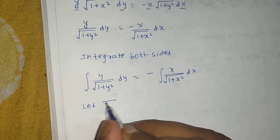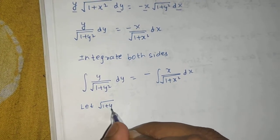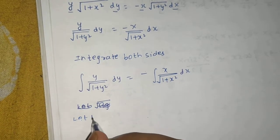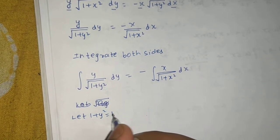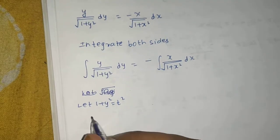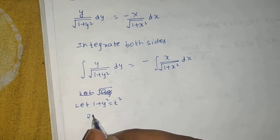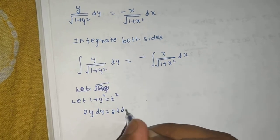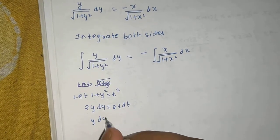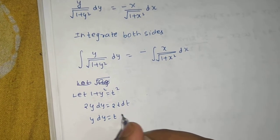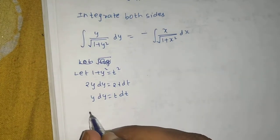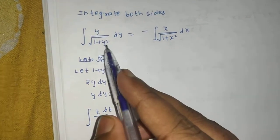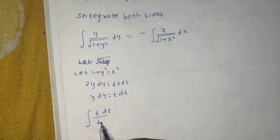Let 1+y² = t². Differentiating both sides gives 2y dy = 2t dt, so y dy = t dt. The integral converts to t dt divided by √(t²), which is t, so the integrand simplifies to dt. That is why we chose 1+y² = t².